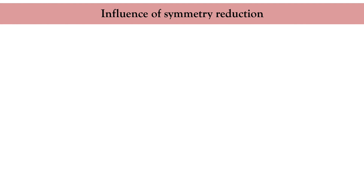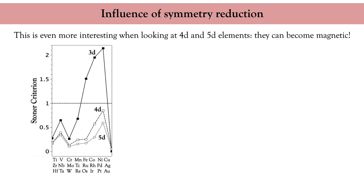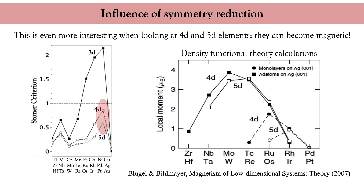Considering now the 4D and 5D transition metals, the Stoner criterion is smaller than 1 for all of these elements. However, it is not too far from 1 for palladium and platinum. Therefore, one can imagine that platinum and palladium could become magnetic if we reduce their dimension — and this is indeed what density functional theory calculations show.